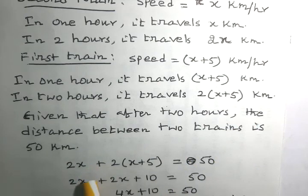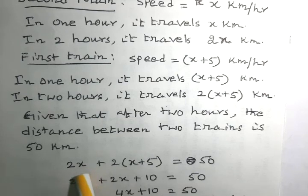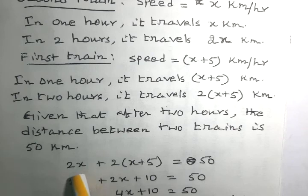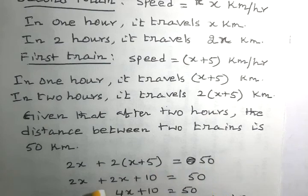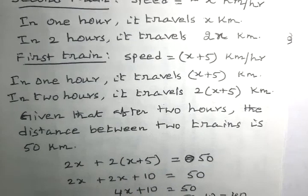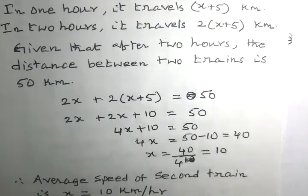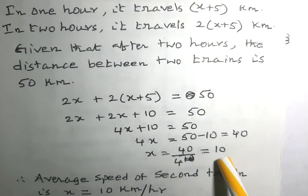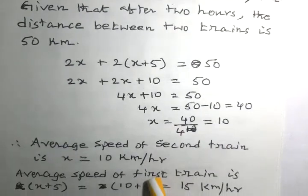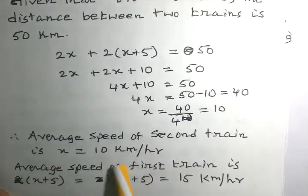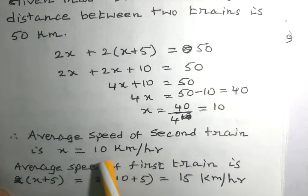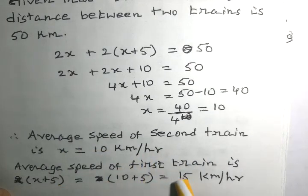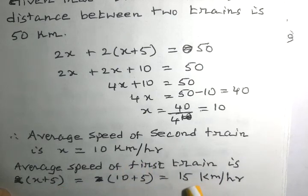The distance travelled by the first train is 2 times x plus 5, and the distance travelled by the second train is 2x. Using the Pythagorean theorem (since they travel at right angles), the total distance between them gives x equals 10. Therefore the average speed of the second train is 10 km per hour, and the average speed of the first train is x plus 5 equals 15 km per hour.